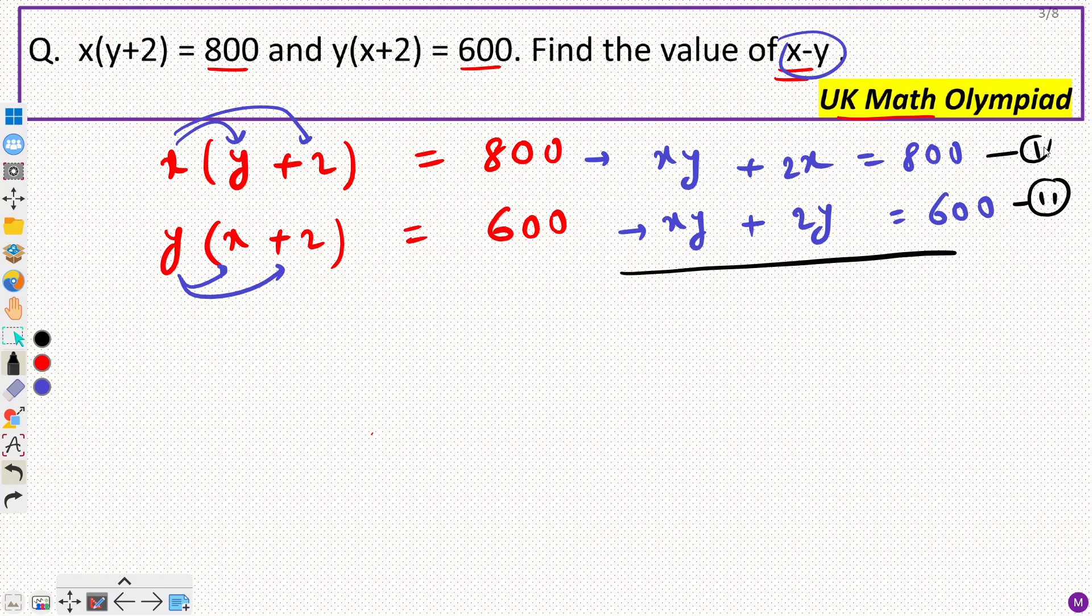So if I subtract second from first, 1 minus 2, then this would be cancelled because these two are same. These two are like terms.